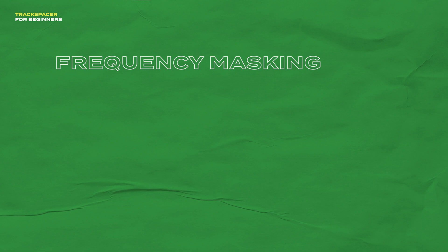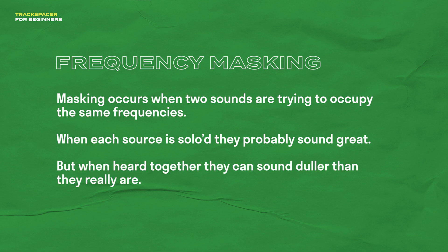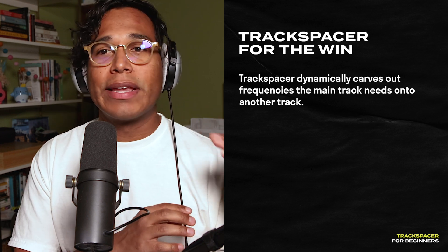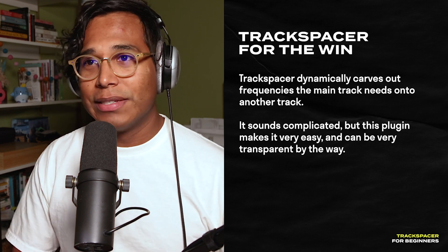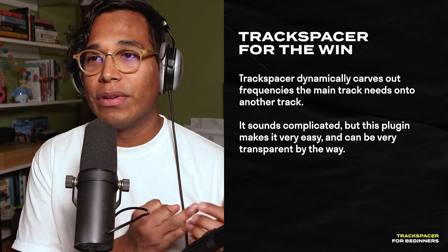Track Spacer helps create space in a mix by addressing frequency masking. If you're unfamiliar with masking, it's pretty common — it occurs whenever two sounds are trying to occupy the same frequencies. While they might sound great on their own, when they're playing at the same time they can sound more dull than they really are. What Track Spacer does is dynamically carve out frequencies that the main track needs onto another track in real time, and the best part is that it does it in a way that's stupid easy and really transparent.